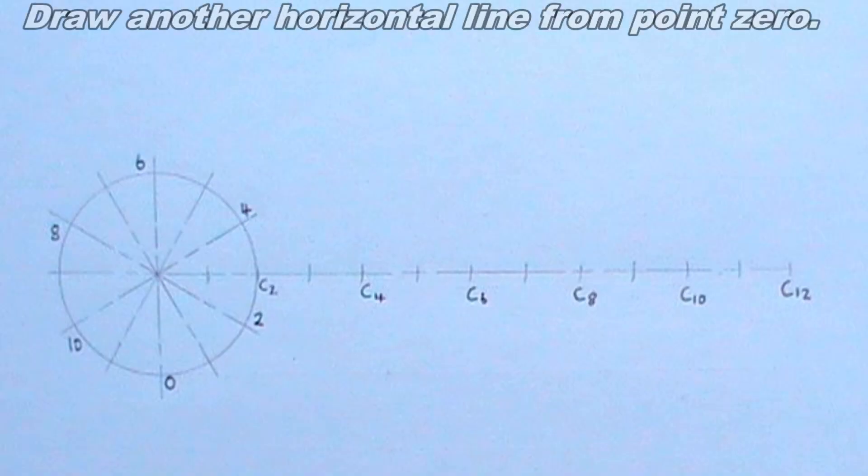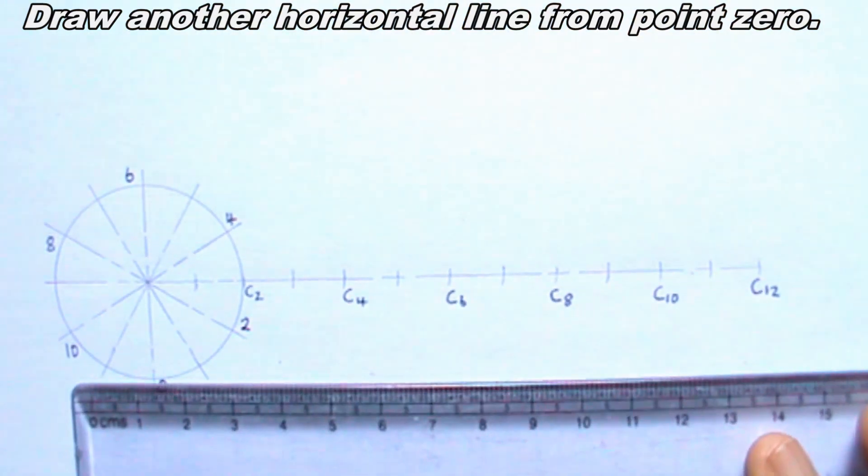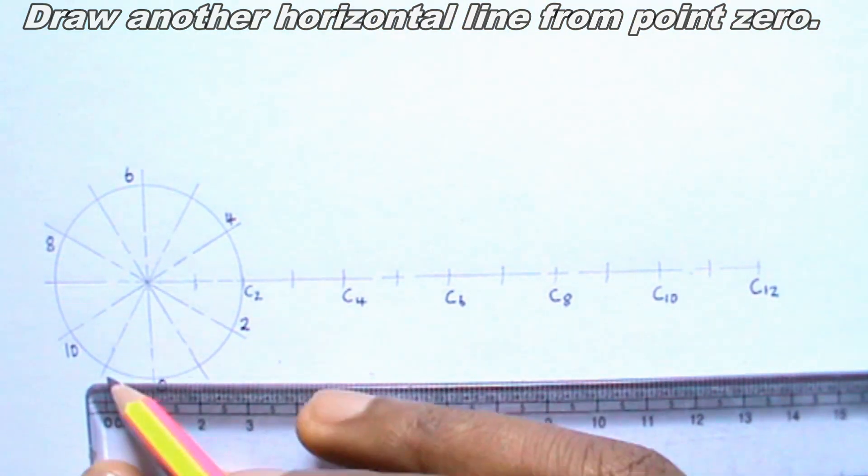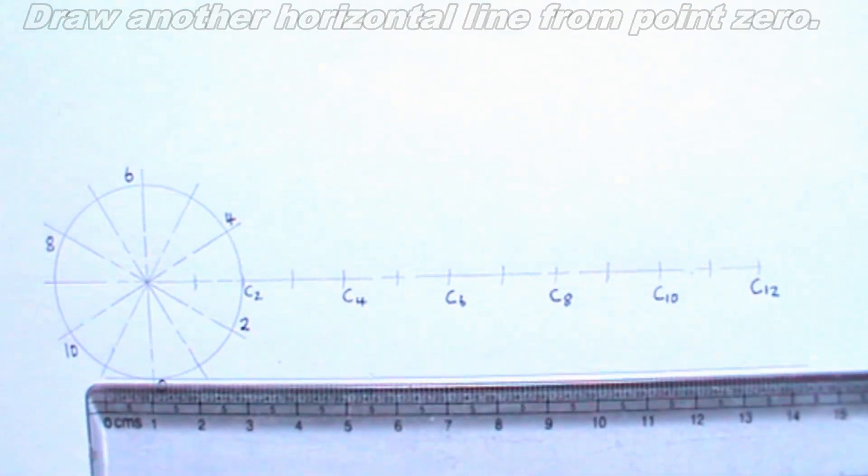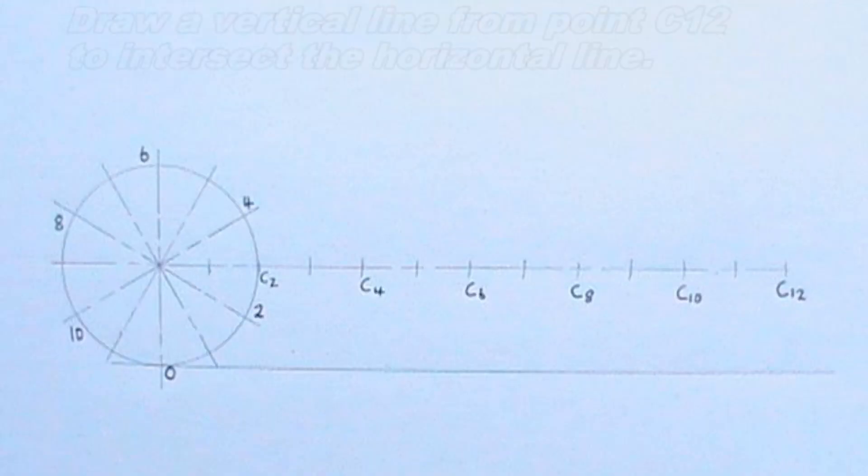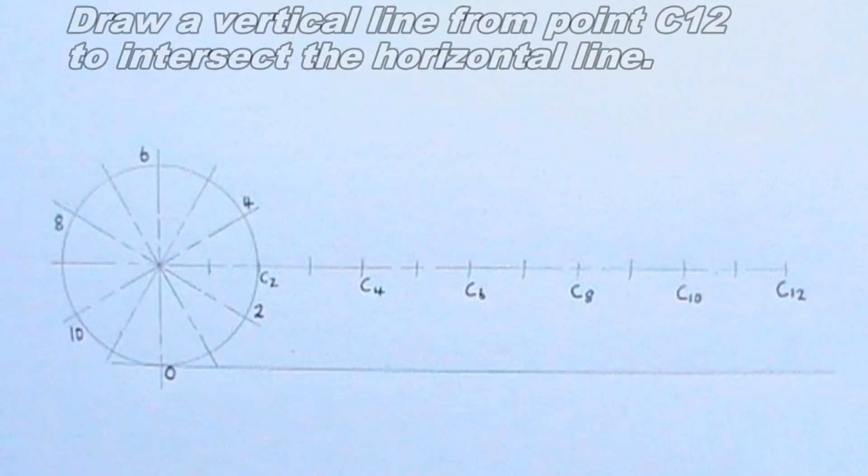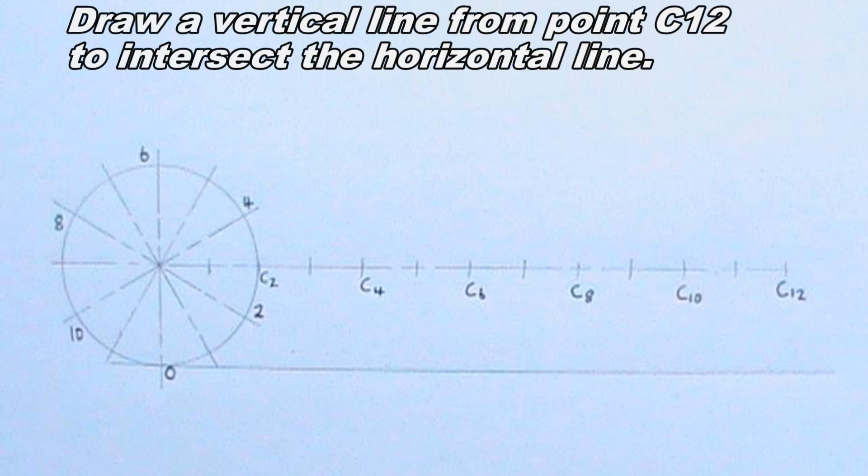I will draw another horizontal line from point zero. Next, I will draw another line from point C12 and intersecting the horizontal line I just drew.